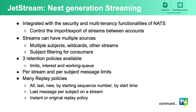Streams can have multiple sources — meaning multiple subjects including wildcards, or other streams. JetStream has three retention policies: limits, meaning messages are stored only up to some limit, at which point you discard either the oldest or newest message to make room; interests, meaning data is kept only as long as there are durable or ephemeral subscribers on that stream; and finally working queue, which allows you to use a stream as a queue.